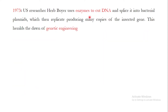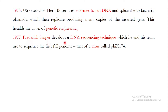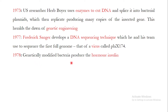In 1973, restriction enzymes were discovered by Boyer, who used them to cut DNA and splice it into bacterial plasmids, which were then replicated, producing many copies of the inserted genes. This was the start of genetic engineering. In 1977, Sanger developed a DNA sequencing technique, which he and his team used to sequence the first full genome of a virus. In 1978, genetically modified bacteria produced the hormone insulin, now known as humulin, using E. coli bacteria.